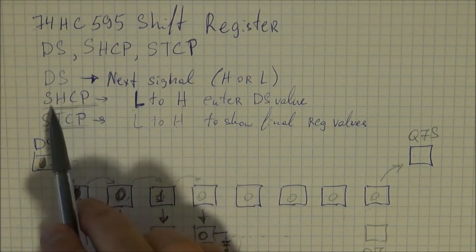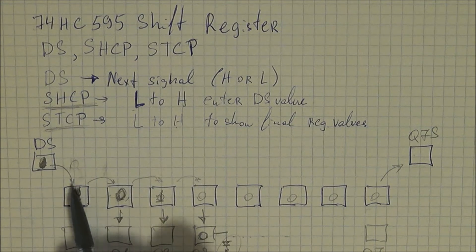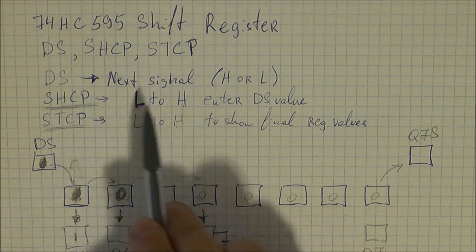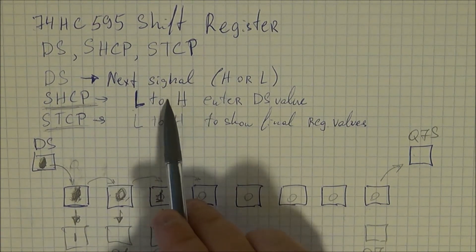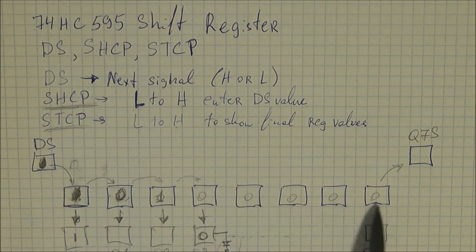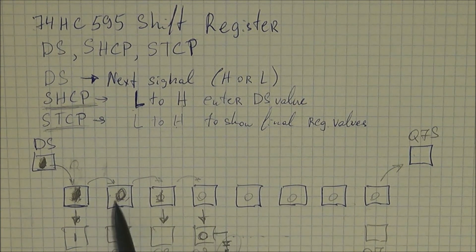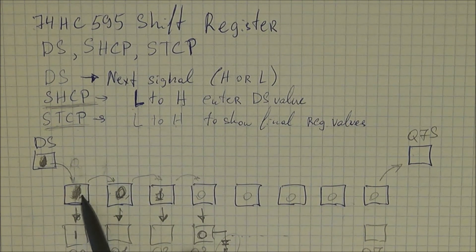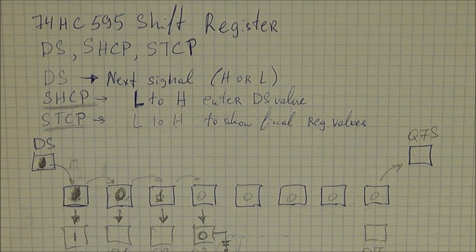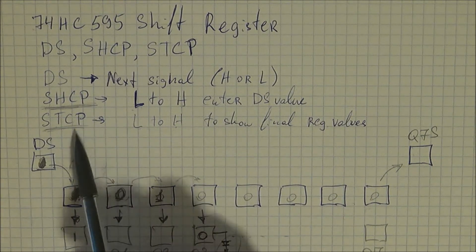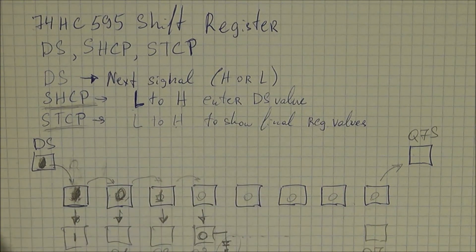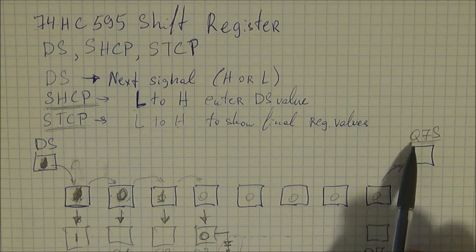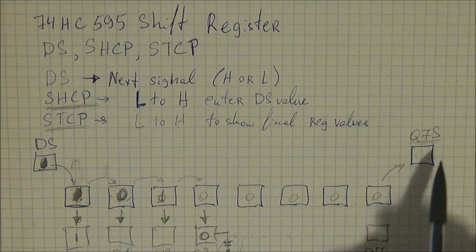So once again, you have to shift in a value one by one with the SHCP pin by changing it from low to high. This is a clock signal for your D latch. And then once you're done with all of them, or you don't need to do all eight in one shot, you have to commit the change and transfer them from these registers into your pin registers Q0 to Q7 by changing STCP from low to high. And note that you have this register to chain your shift registers if you wish.